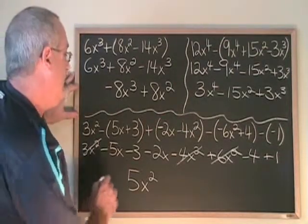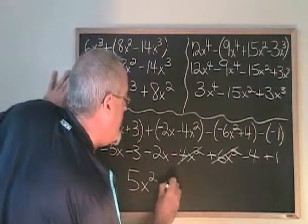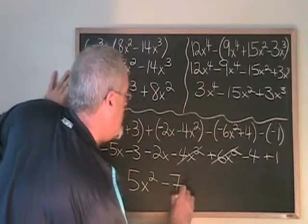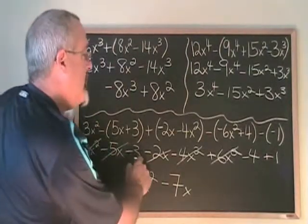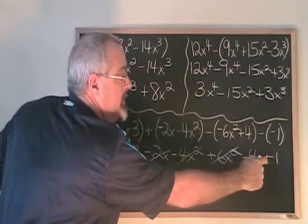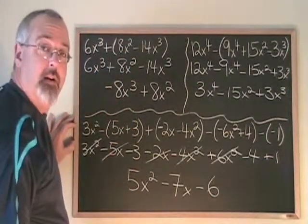For the x terms, we have minus 5x minus 2x, which combines to give minus 7x. Cross them out. And then the constant terms: minus 3 minus 4, which is minus 7, plus 1 means minus 6. This is our final answer.